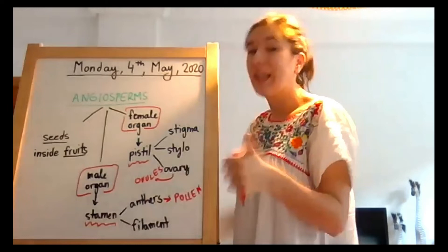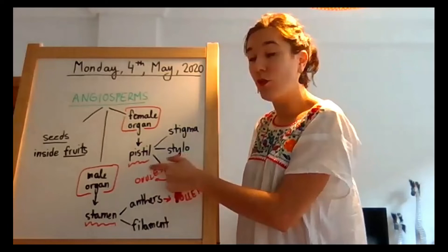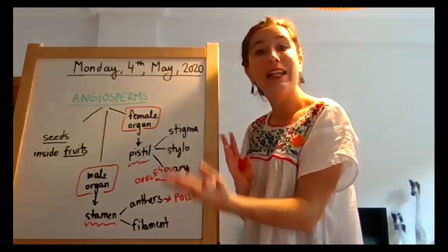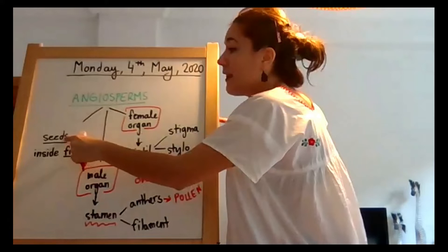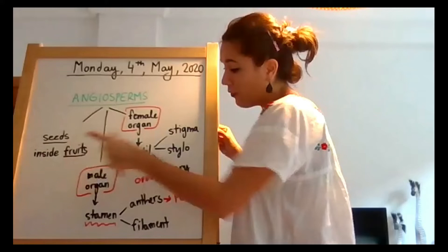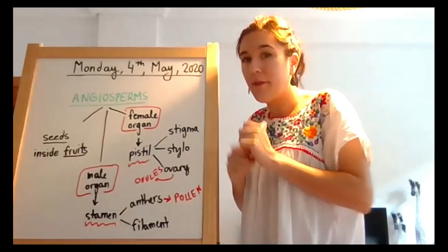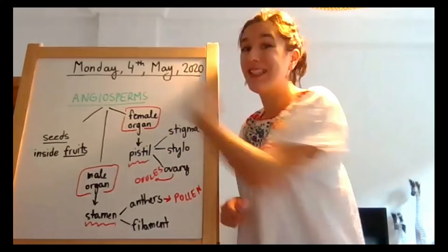When the wind or insects take the pollen from the anthers to the pistil and it joins the ovules, that is when fertilization happens and the plant starts developing seeds. The seed is the ovule joined with the pollen, and the fruit is the ovary — the ovary grows and turns into a fruit.